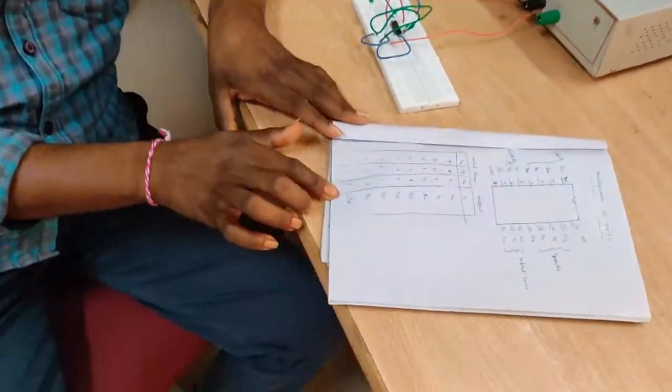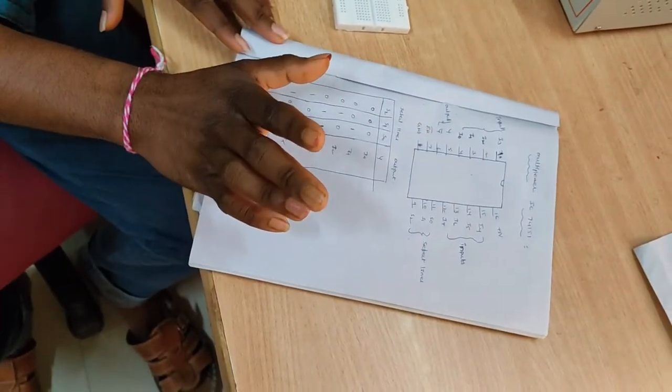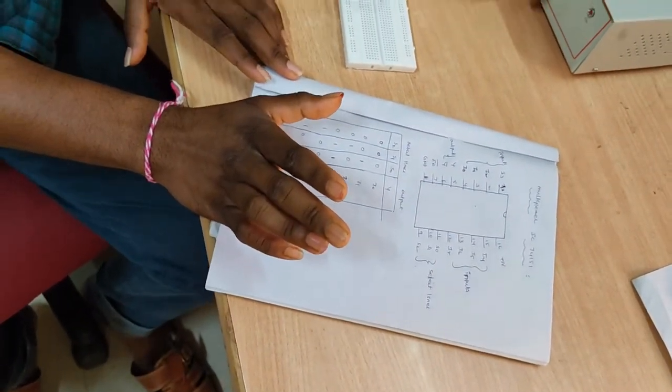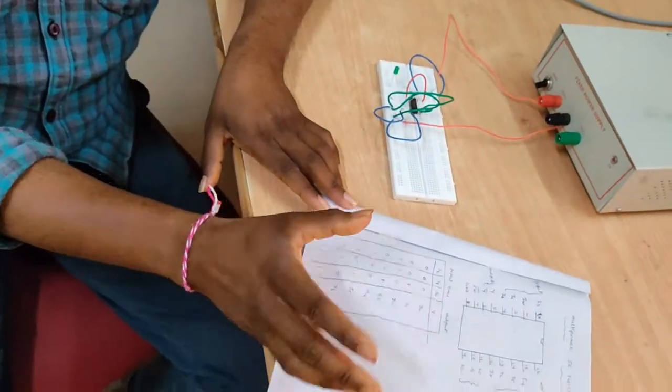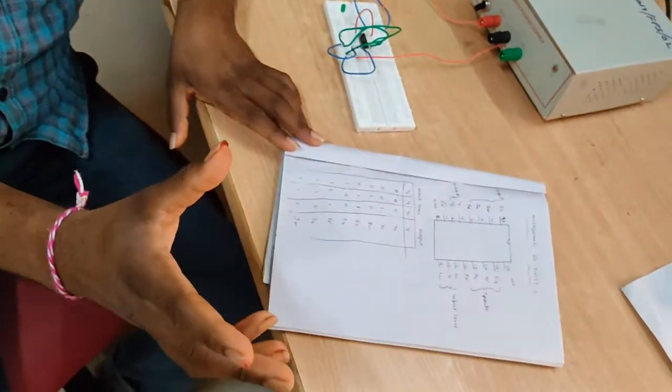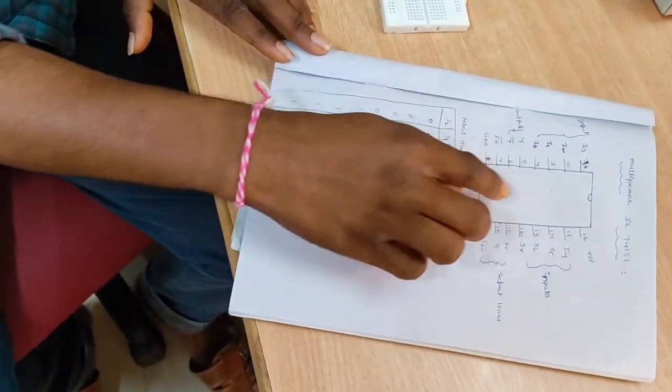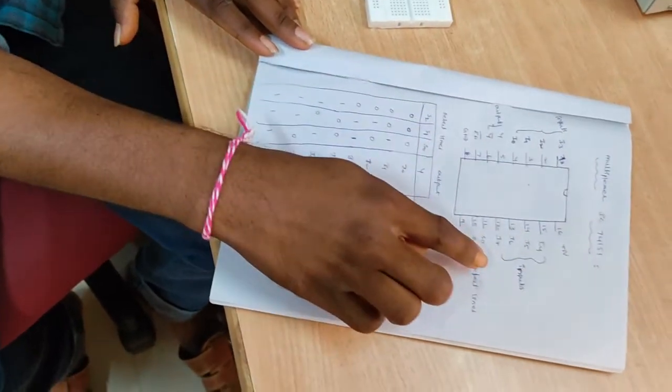So multiplexer is also known as a data selector. It is used to select the data from many inputs to a single output line. That means it has N inputs and 1 output.